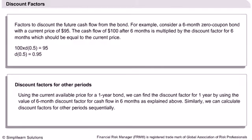Suppose we want to find the discount factor for more periods. Then we can take another bond maturing in one year and discount the cash flows using the six-month discount rate and the one-year discount rate. In this case, the present value is equated to the current price of $95.